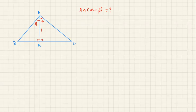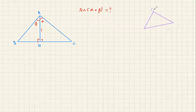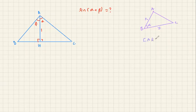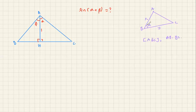Before we proceed, since this is a trig lesson, you really want to know the area of a triangle using sine. Let me remind you of that quickly. For any triangle — right, acute, or obtuse — if you know one angle and the two sides connecting at that vertex, the area equals one half times those two sides times the sine of the angle measured between them. So area equals one half times AB times BC times sine of alpha.